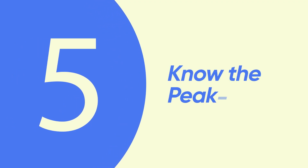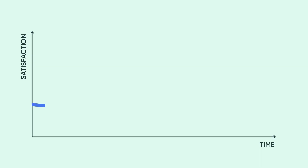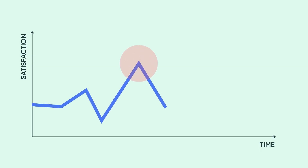Five: know the peak-end rule. And finally, know your theory on onboarding. The peak-end rule is a cognitive bias that none of us are immune from. It basically means that users will remember the climax and the end of an experience. So while onboarding, this becomes an even more important phenomenon, as it may dictate whether your users are going to be fans or churners.